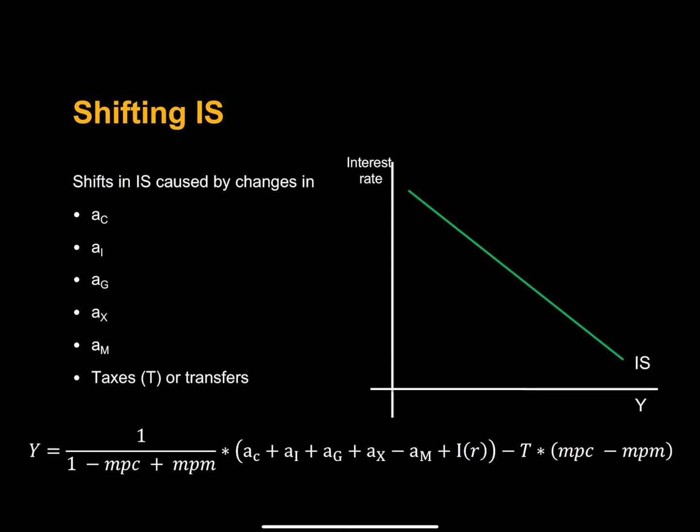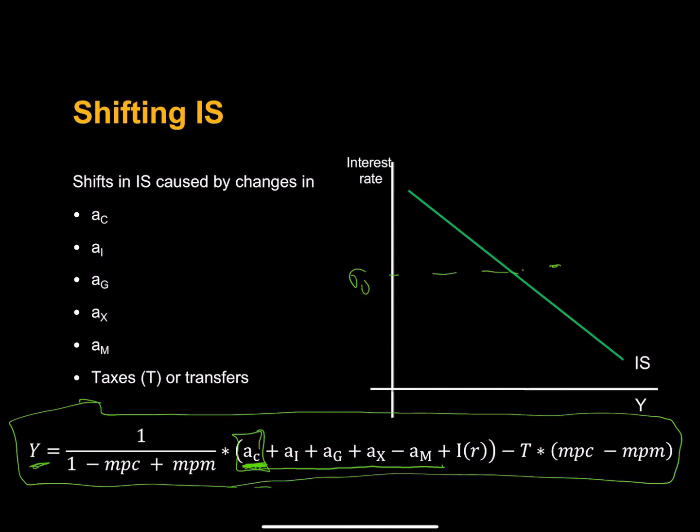Now let's talk about what might cause the IS curve to shift. Let's look at this equation right here. We see there are a lot of variables other than the interest rate that might influence real expenditures. Are you feeling optimistic? If you're feeling optimistic, you might go shopping. If you go shopping, that's going to be an increase in autonomous consumption. And if we hold the interest rate constant, we should see an increase in real expenditures. And the IS curve should shift to the right. Perhaps the government wishes to stimulate the economy and increases infrastructure spending. If the government increases infrastructure spending, holding the interest rate constant, we should also see a rightward shift in the IS curve.